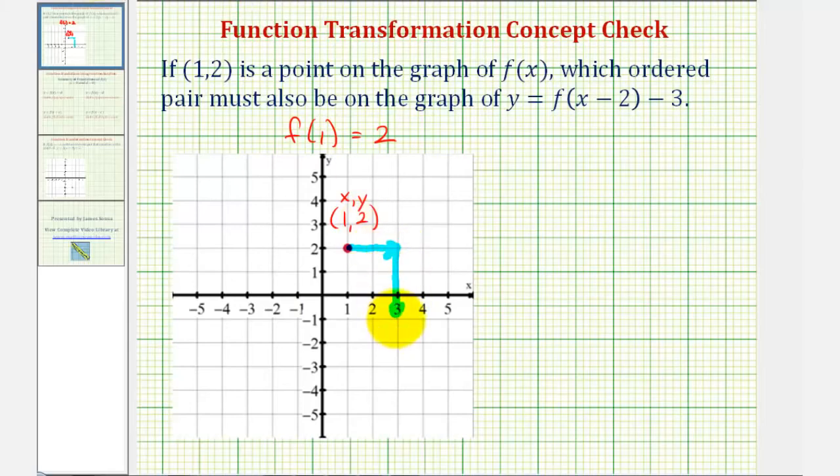Which means the point (3,-1) must be on y equals f(x - 2) - 3.